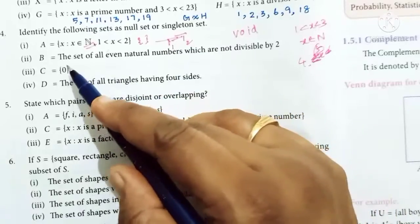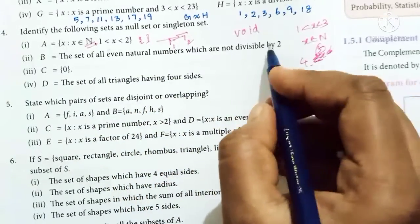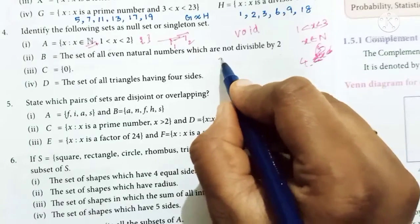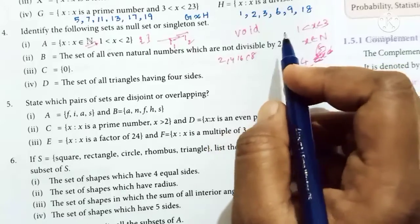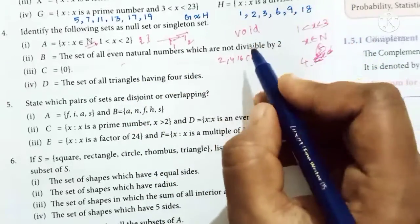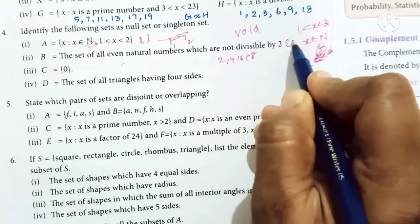Next, B: the set of all even natural numbers which are not divisible by 2. Even natural numbers are 2, 4, 6, 8, and all are divisible by 2. So there are no even numbers not divisible by 2. B is again a null set.